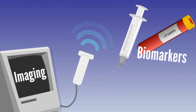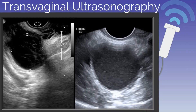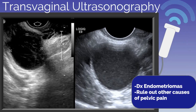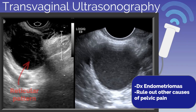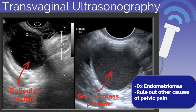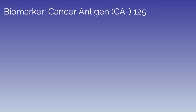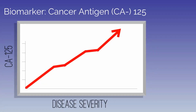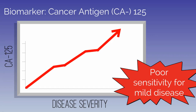Imaging and biomarkers can also be used to aid diagnosis. Transvaginal ultrasonography can detect endometriomas if they are present, and helps exclude other potential causes of pelvic pain. Endometriomas can range in appearance from a hemorrhagic functional cyst to similar to malignancy. A hemorrhagic cyst has a reticular, fishnet or lacy appearance, while the classic appearance of an endometrioma has a diffuse ground glass appearance. CA-125 can be a biomarker, but is not often clinically used; in general, levels correlate with disease severity, though CA-125 has poor sensitivity to detect mild disease.